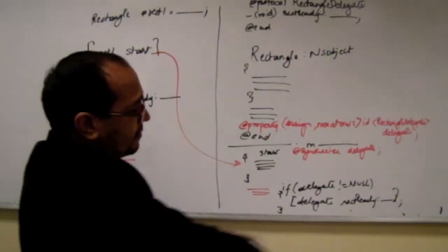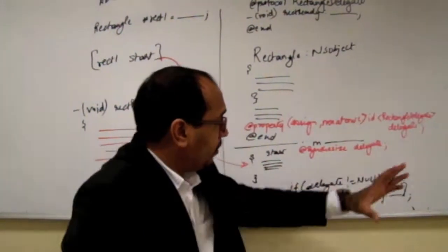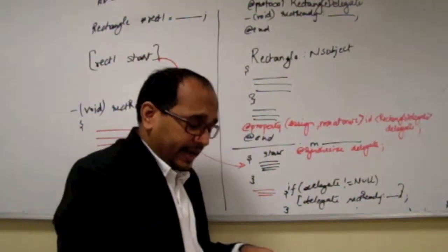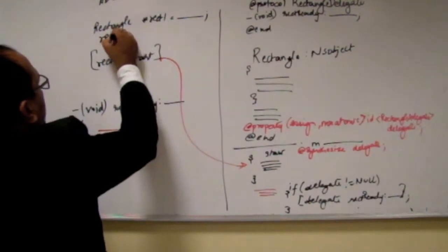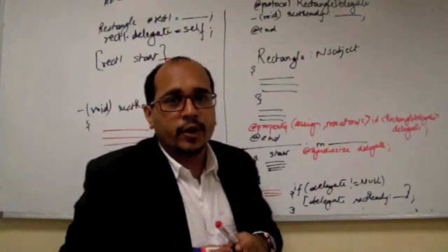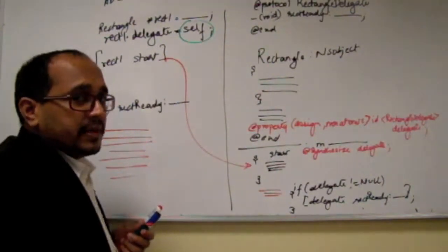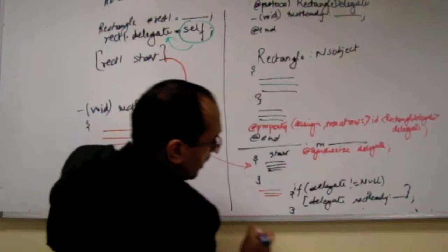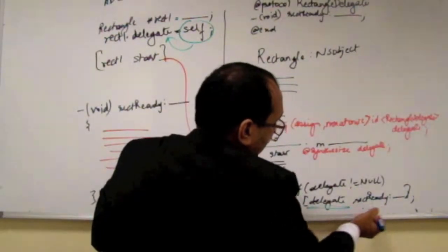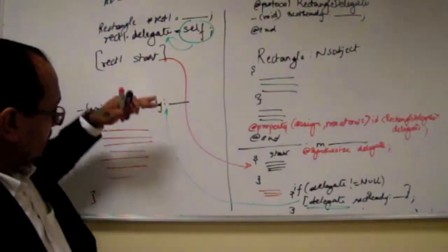How will ABC register its object as the delegate? Simple. We created rect1 — rect1 has a property called delegate. We say rect1.delegate = self. Self here is the 'this' pointer. Basically, the ABC object — the current object of ABC — has registered itself to be the delegate. So the reference of object ABC is stored there. Hence, when Rectangle calls [delegate rectReady], the control comes to the ABC object, you get the callback, and you start implementing. Protocol becomes the important part in asynchronous programming.